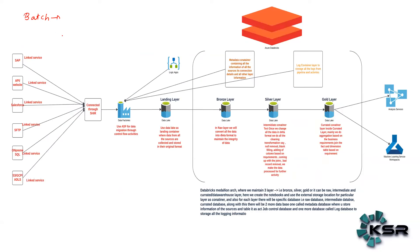Now let's see how we implement this in a project. This is a typical architecture for any project. Here I'm showing a batch-oriented process. Batch-oriented data means we fetch data in batches — either daily, weekly, or monthly — it will not be real-time streaming data. If you are using real-time, the architecture won't differ much — about 80% will be the same — but you'll be using streaming tools like Kafka or other real-time streaming tools.